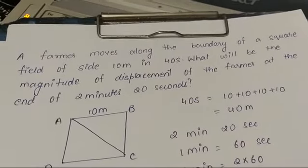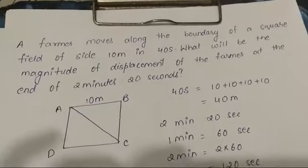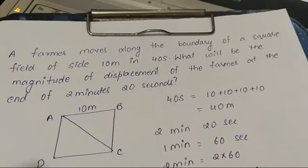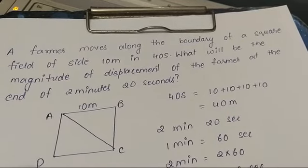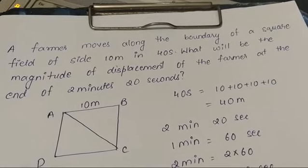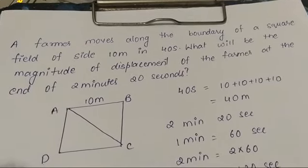Okay, now let us solve an in-text question. A farmer moves along the boundary of a square field of side 10 meters in 40 seconds.